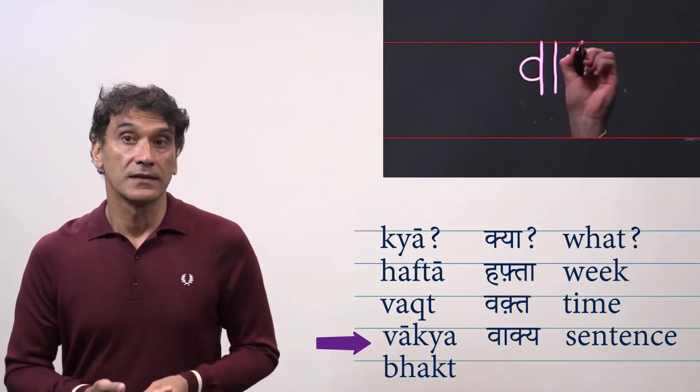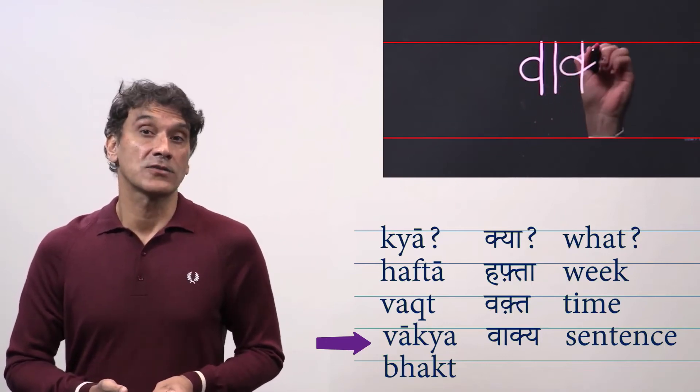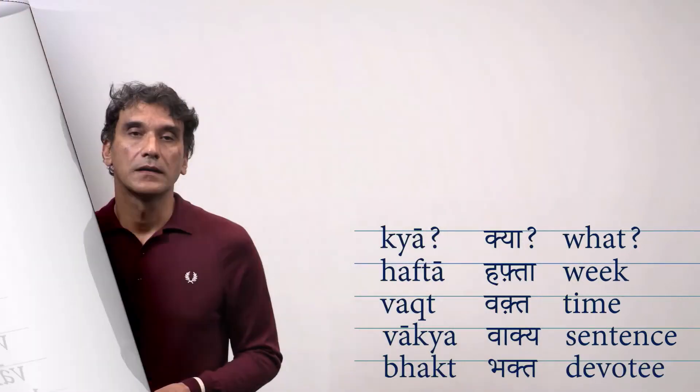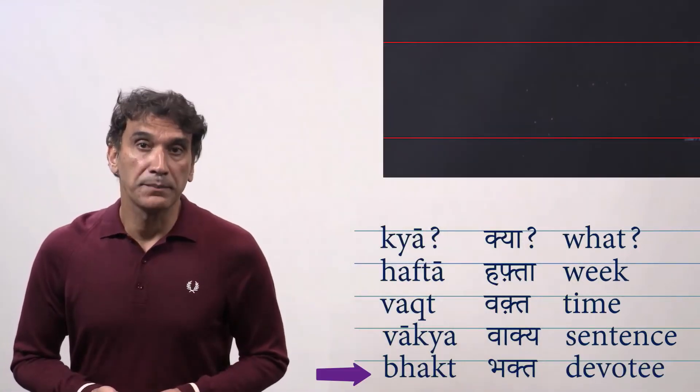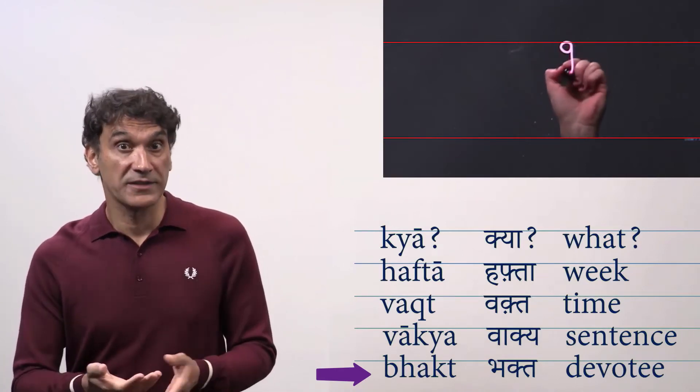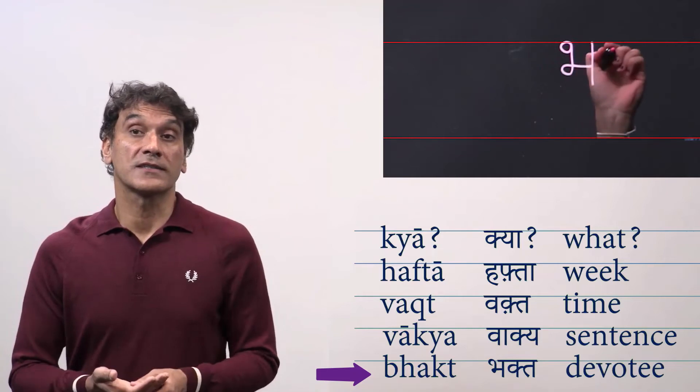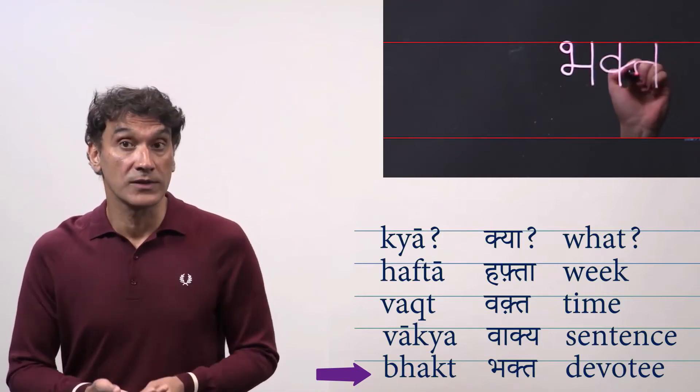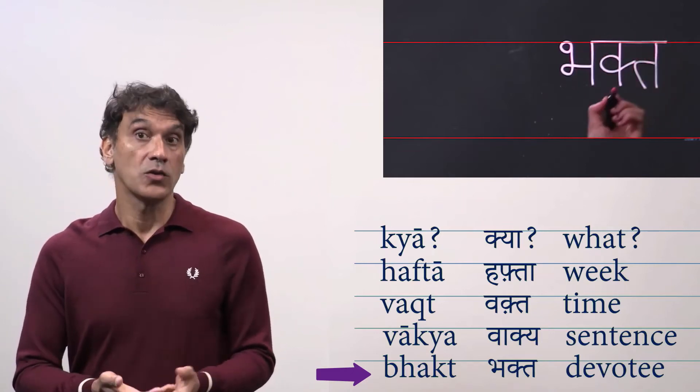Then the consonant cluster kya. So half ka attached to the next consonant ya. Kya. So vakya. The last word is bhakt meaning a devotee. The first syllable is bha, the aspirated bha. Then the consonant cluster kta. So you write half ka and attach it to the next consonant ta. Kta. So bhakt.